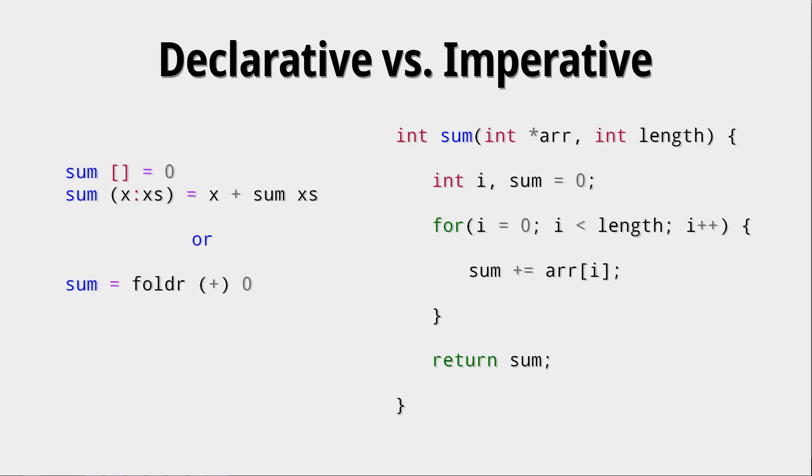In the declarative approach, we actually define or sort of define what it means to have a sum. We say that a sum of an empty list is just zero, and a sum with a list with at least one element x is that element x plus whatever the rest of the sum is. Now, using some fancy tricks like partial function application and the folding function, we can have a much shorter function definition, but what that actually means, we will learn later in the course.